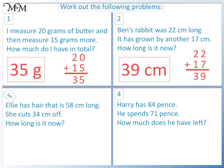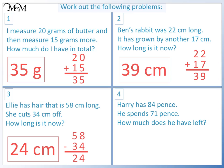Question 3. Her hair was 58 centimetres. We remove 34 centimetres. This is a subtraction. 8 take away 4 equals 4 and 5 take away 3 equals 2. It is now 24 centimetres long.